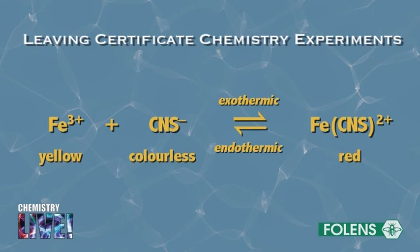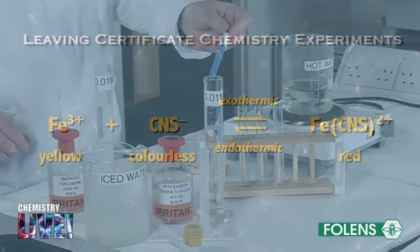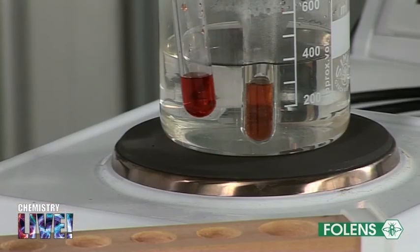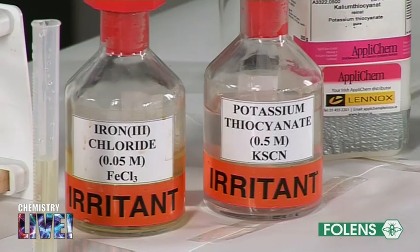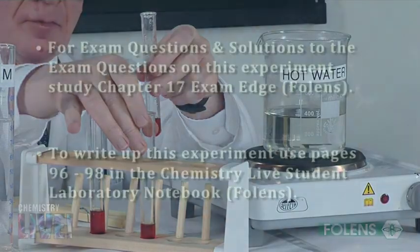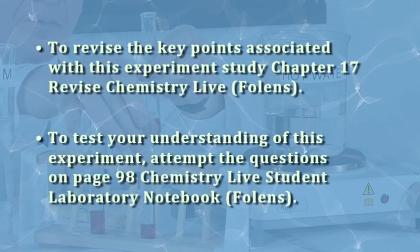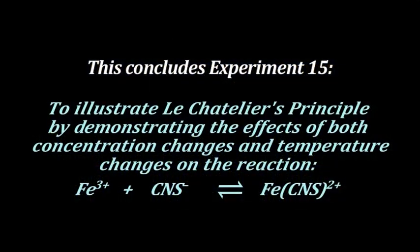We conclude that adding heat favours the direction of the endothermic reaction and removing heat favours the direction of the exothermic reaction. This concludes the second part of the experiment to investigate the effect of temperature on the equilibrium reaction between iron chloride and potassium thiocyanate. This concludes the experiment.